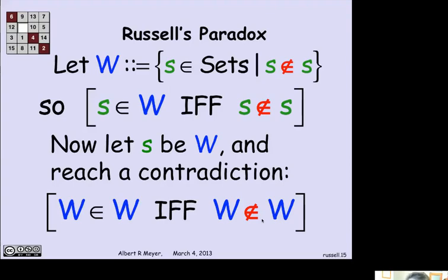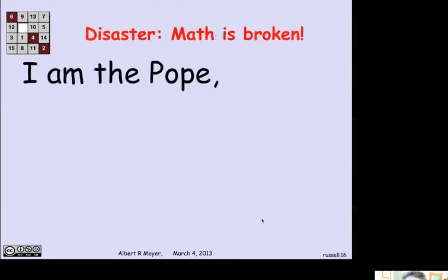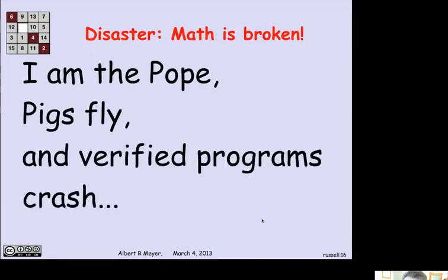Poor Frege. His book was a disaster. Math is broken. You can prove that you're the pope. You can prove the pigs fly. Verified programs crash. Math is just broken. It's not reliable. You can prove anything in Frege's system because it reached a contradiction. And from something false, you can prove anything.